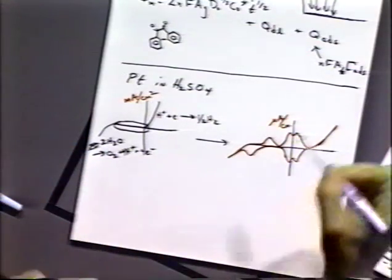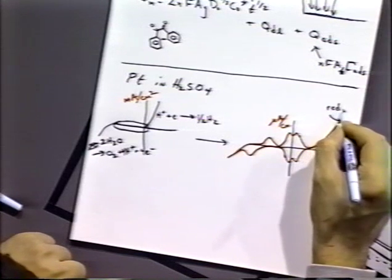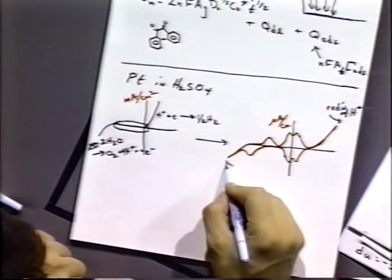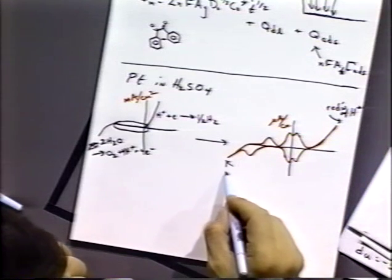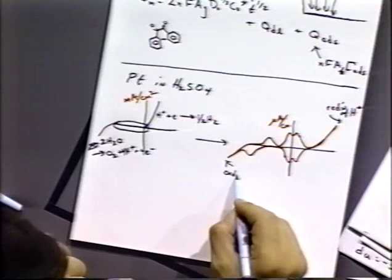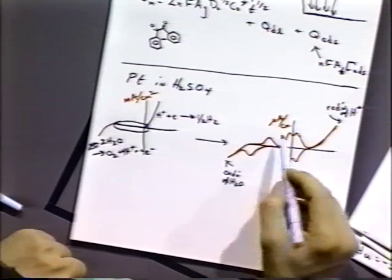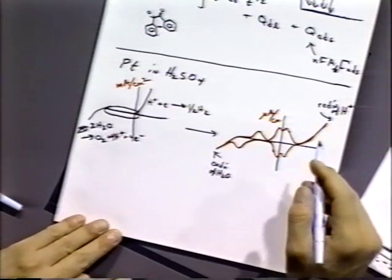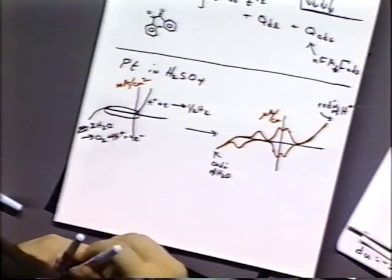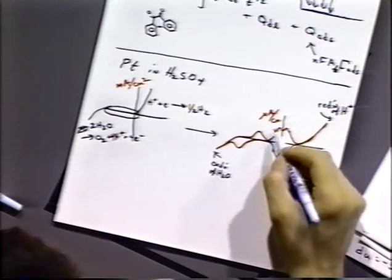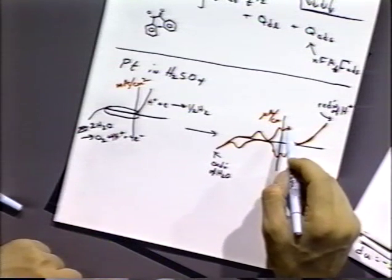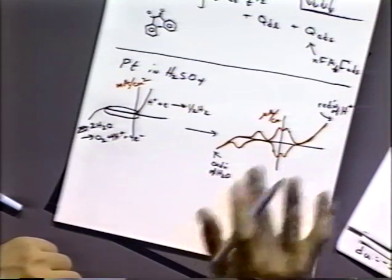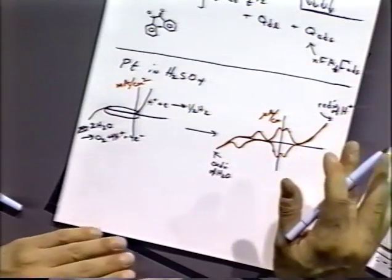So we're talking about a hundred or thousand-fold change in the scale here. Now this is the reduction of proton. And this would be, if we continued, would be the oxidation of water. But what about these other things that are showing up here? Well, it turns out that this is an absorbed hydrogen atoms or ions on the surface of platinum.